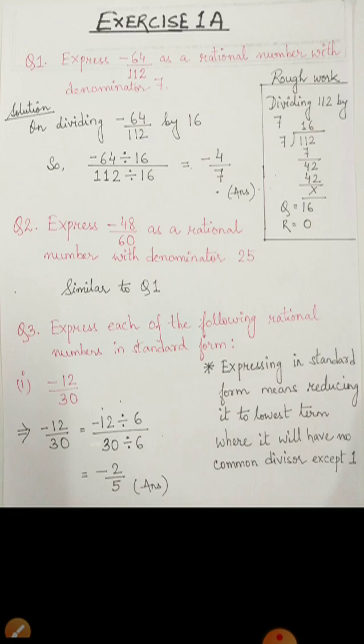So, on dividing 6 from both the numerator and denominator, we get minus 2 by 5. And we can clearly see that 2 and 5 have no common divisor except 1. Hence, this is the standard form.